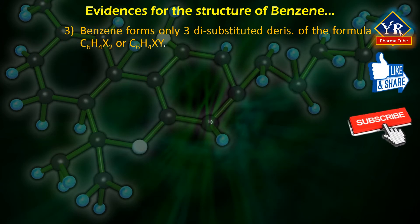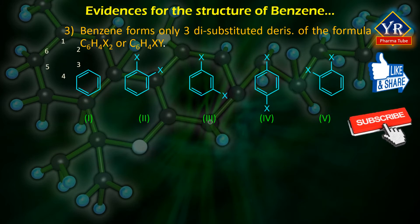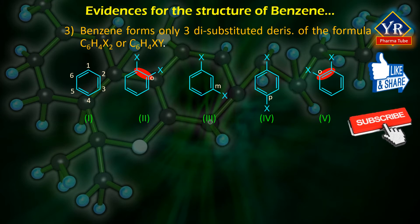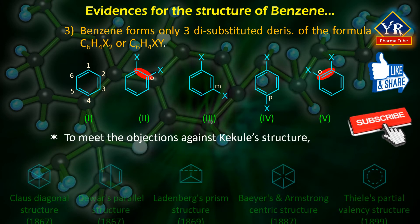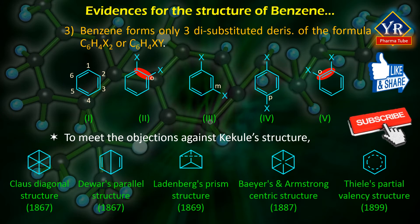Number three: benzene forms only three disubstituted derivatives of formula C6H4X2 or C6H4XY. Kekule's structure should give four disubstituted derivatives instead of three, since the C1-C2 bond (single bond character) is different from the C1-C6 bond (double bond character), predicting two ortho, one meta, and one para isomers rather than the observed three: one ortho, one meta, and one para. A number of alternative formulae were suggested, but none could satisfy all the observed properties and were consequently rejected.